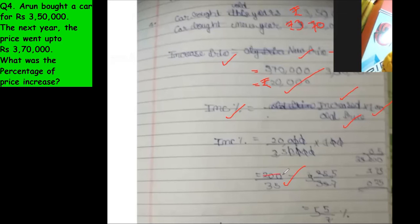By five, seven. Yes, 40... five, five upon seven percentage. This is correct, good.